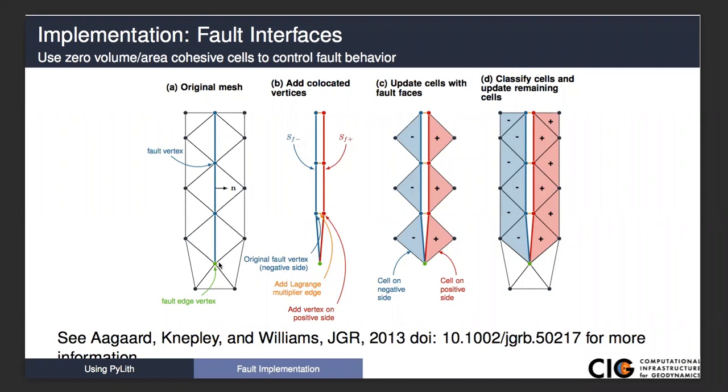What PyLith does at runtime is it will split that mesh. You'll have your original vertices shown here in blue, and it'll create new cells on the positive side of the fault. It'll add new vertices. Then in between it adds what we call cohesive cells. These are zero area, zero volume cells that we use as the bookkeeping to handle the entire fault implementation.